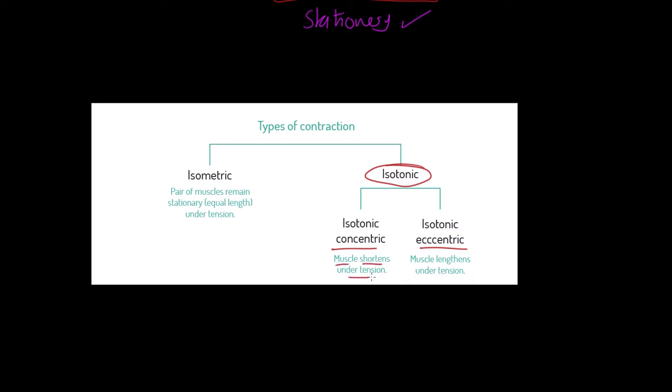If the muscle shortens under tension, that is an isotonic concentric contraction, the most common type of contraction in sporting movements. If the muscle lengthens under tension, that is an isotonic eccentric contraction. Finally, the third type of contraction is isometric, which literally translates to equal length. This is where the muscle will contract but remain stationary under tension. Think about examples where stillness, balance, moments where the body must remain completely static, a sprint start, a downhill skiing position.